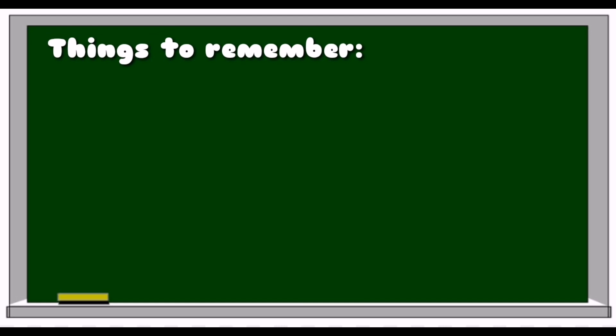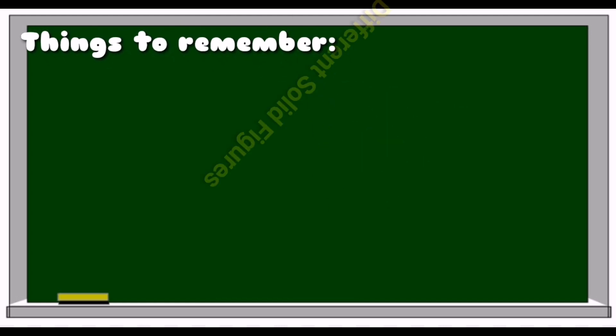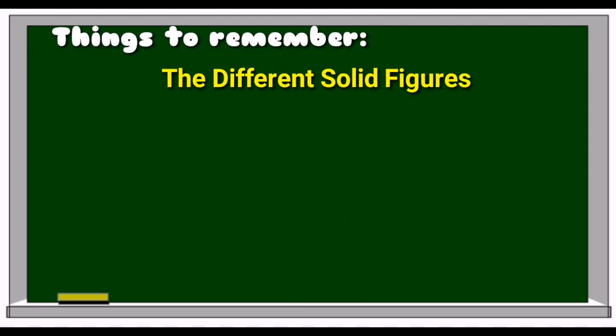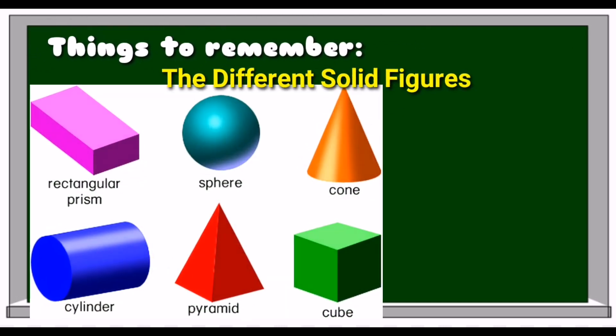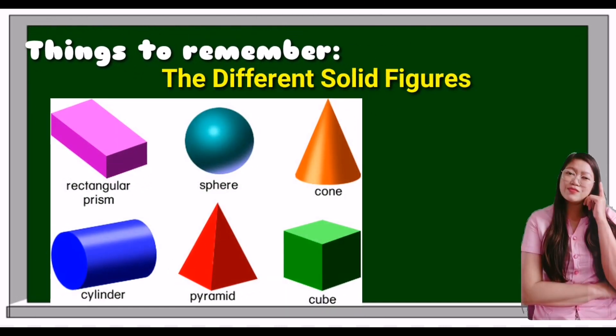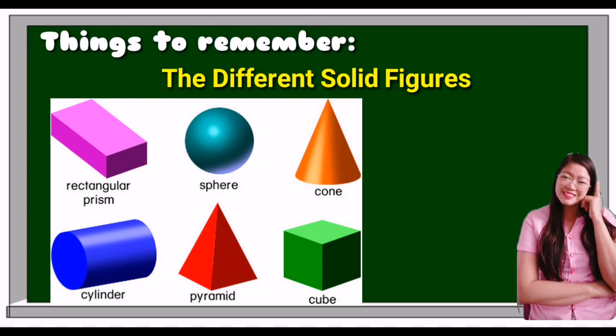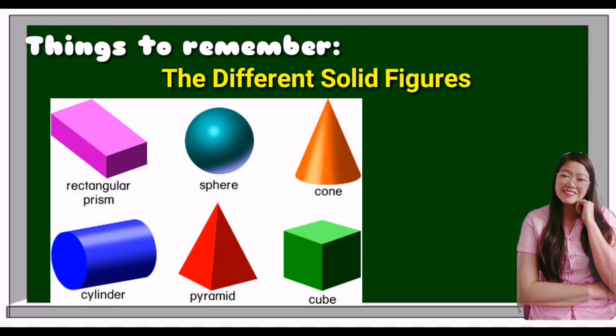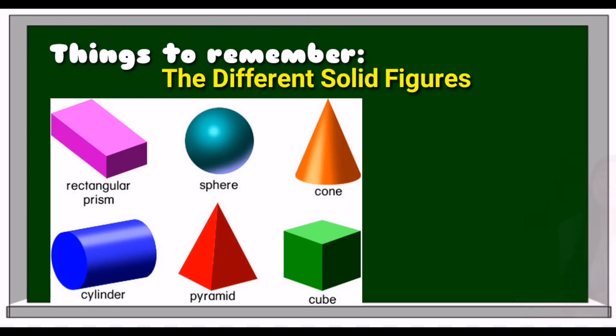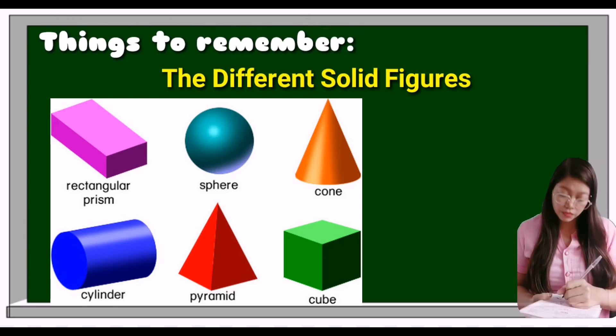Things to remember: The different solid figures are rectangular prism, sphere, cone, cylinder, pyramid, and cube.